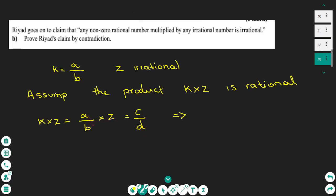From the equation a over b times z equals c over d, using cross multiplication and making z the subject, we find that z equals c times b over d times a. This says that z is a rational number — which is impossible because we originally considered z to be irrational. So we arrived at a contradiction.